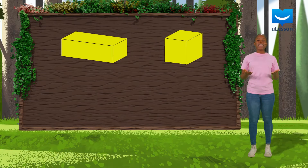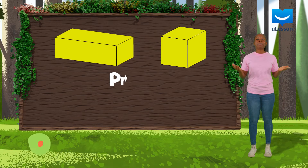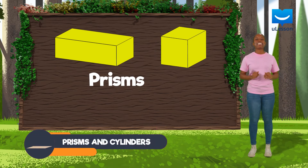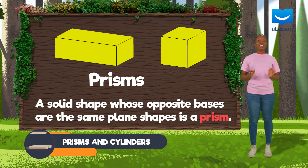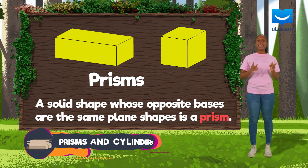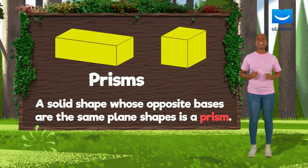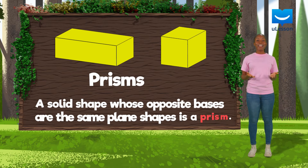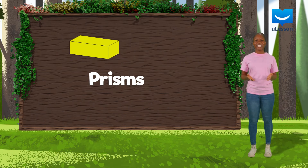Did you know that these shapes are called prisms? A solid shape whose opposite faces are the same plane shape is classified as a prism. Think of it as joining identical plane shapes together until you obtain a desired level of thickness.